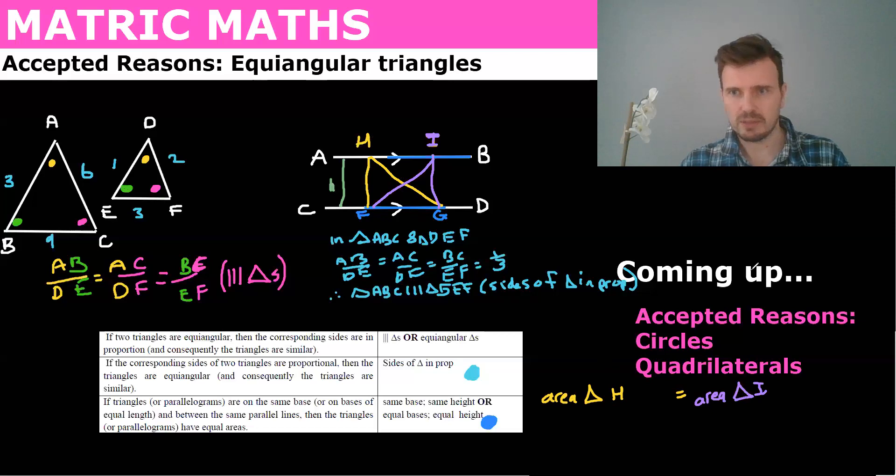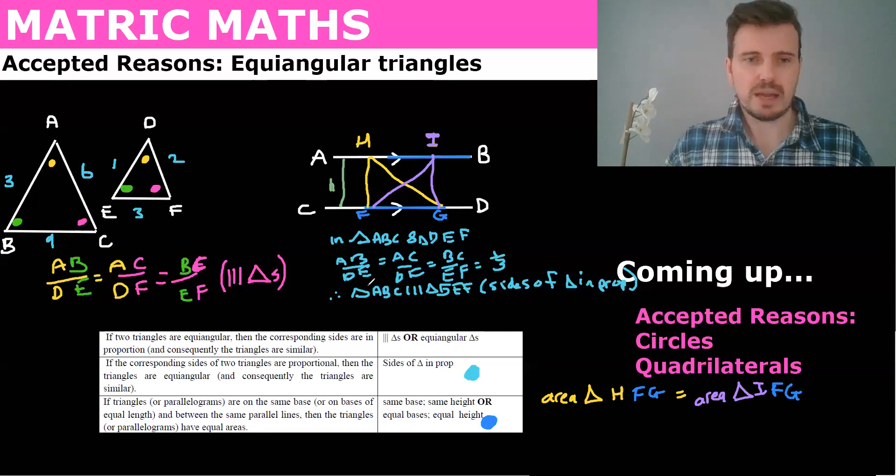So what we would say is the area of triangle HFG equals the area of triangle IFG. I'm going to do FG in the same color on both sides. So you can see that they have the same base, the same perpendicular heights that I've done in this light green color. And so we could therefore say area triangle and our reason would be same base, same height.